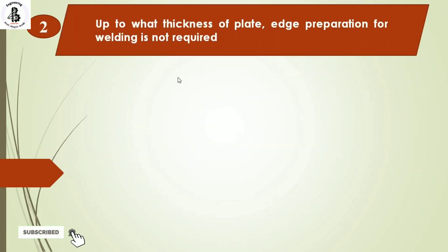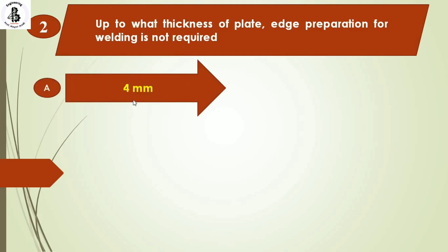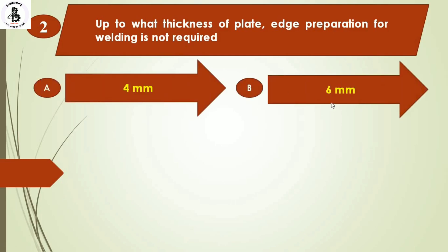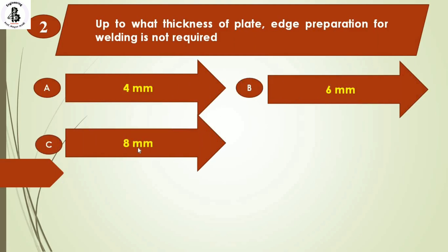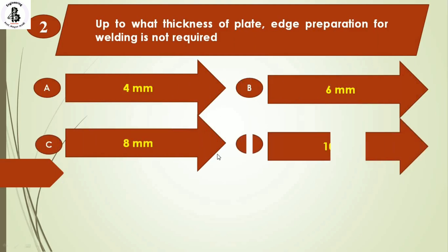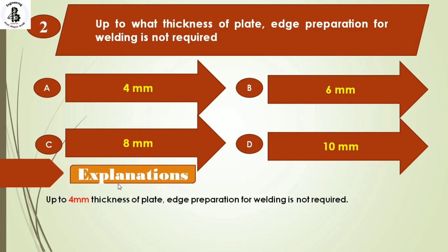Next: up to what thickness of plate is edge preparation for welding not required? Option A: 4 mm. Option B: 6 mm. Option C: 8 mm. Option D: 10 mm. Basically, up to 4 mm thickness of the plates, edge preparation for welding is not required. So the answer is option A.